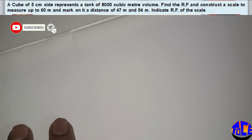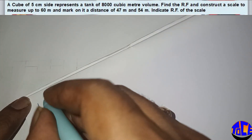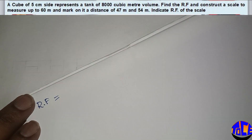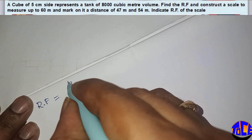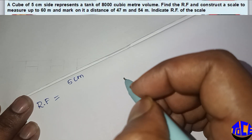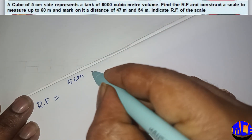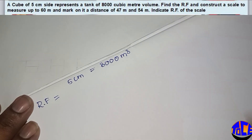Before that, we need to calculate what is the RF value. Here in the question, it is mentioned that 5 centimeters represents a tank of 8000 cubic meters. So this 5 centimeter length is representing 8000 cubic meters.